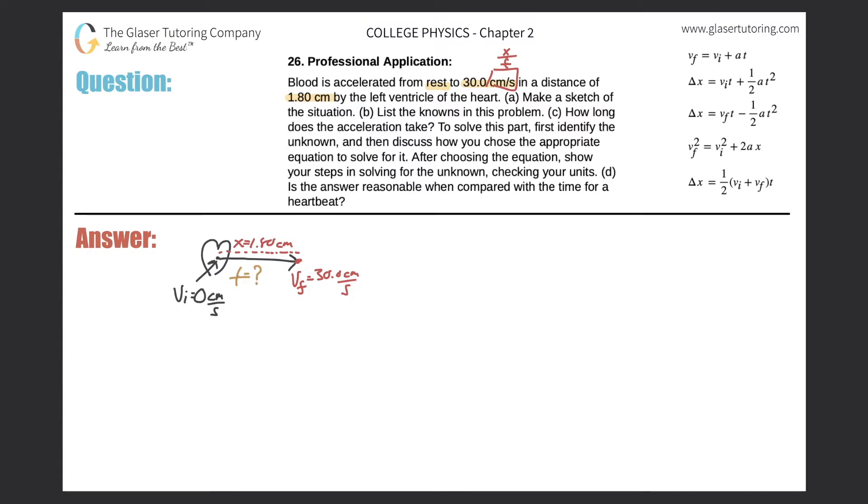So what I want to do is I want to see, do I know a relationship between these four variables: initial velocity, final velocity, displacement, and time, in one of my equations of kinematics in the upper right-hand corner? So take a look through them. Have you found one? It sounds like we might be able to use one of the formulas. How about using the last one?